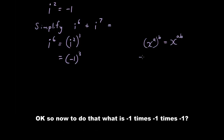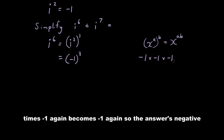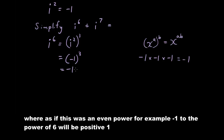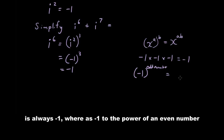So what is negative 1 times negative 1 times negative 1? Negative 1 times negative 1 is positive 1, and positive 1 times negative 1 is negative 1, so the answer is negative 1. In general, negative 1 to an odd power — such as to the power of 5 or 7 — will always be negative 1, whereas negative 1 to an even power — such as to the power of 6 — will always be positive 1. Let me just write that down: negative 1 to an odd number is always negative 1.